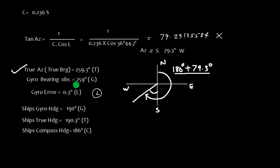If you remember, the gyro bearing which we observed was 259 degree gyro. Obviously, if you see carefully, the gyro is reading low, so gyro error is 0.3 degree low.